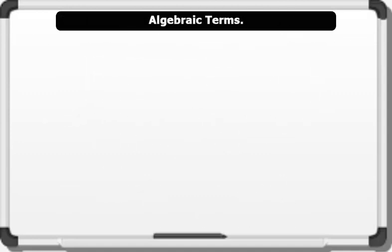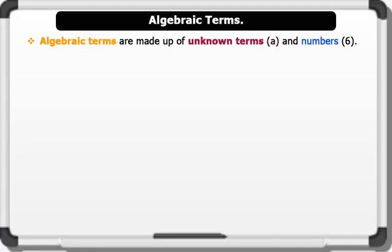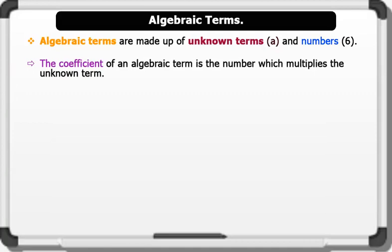Algebraic terms. Algebraic terms are made up of unknown terms and numbers. Remember that the coefficient of an algebraic term is a number which multiplies the unknown term.